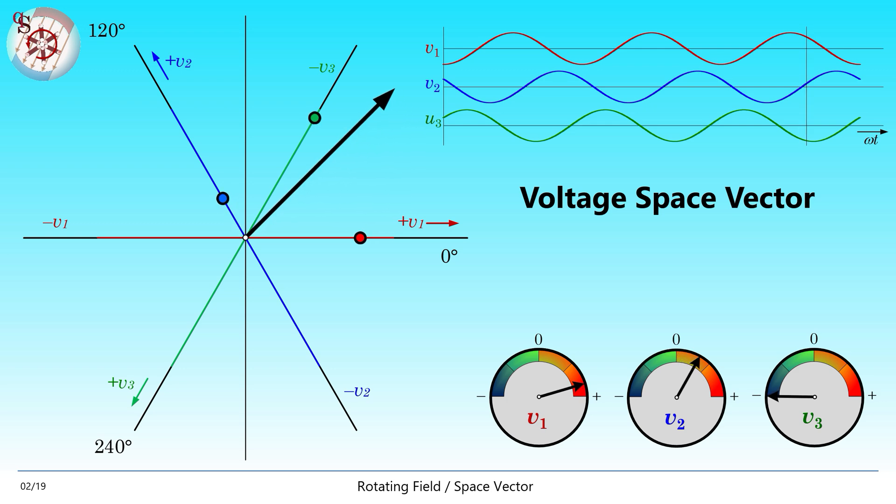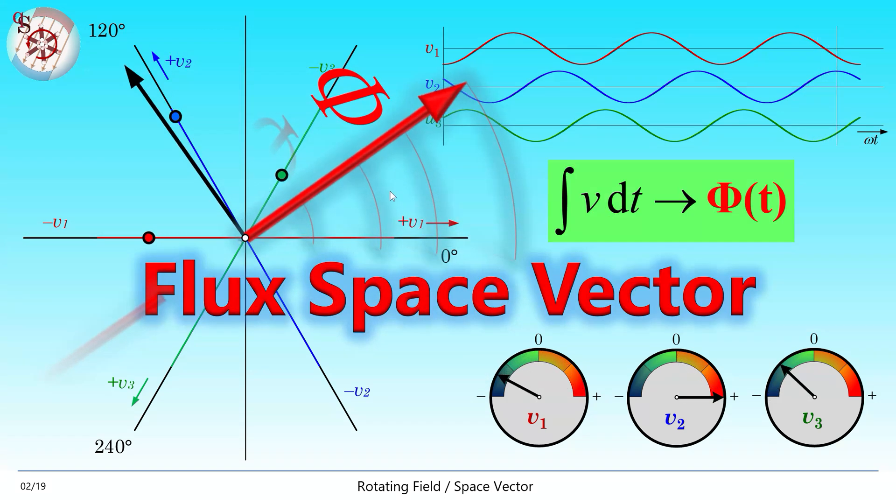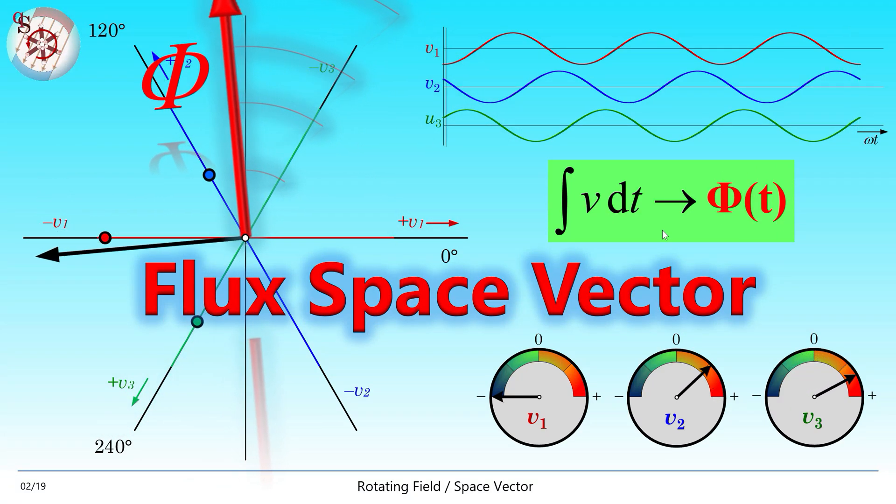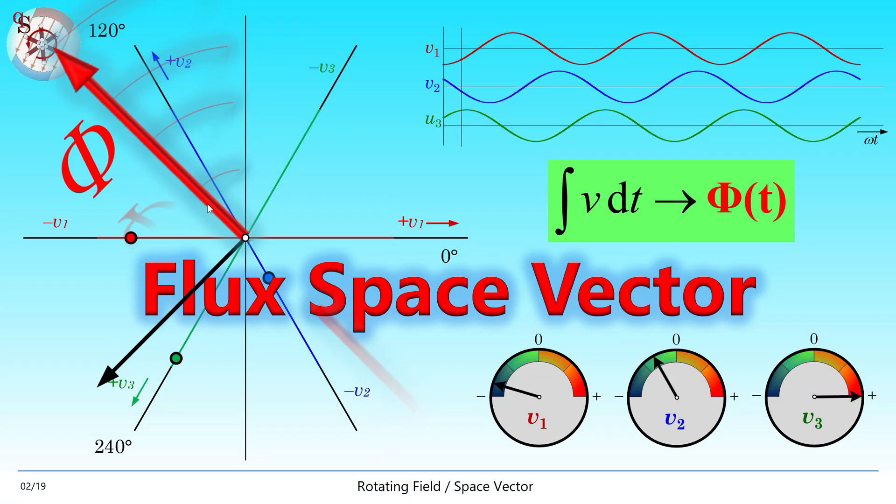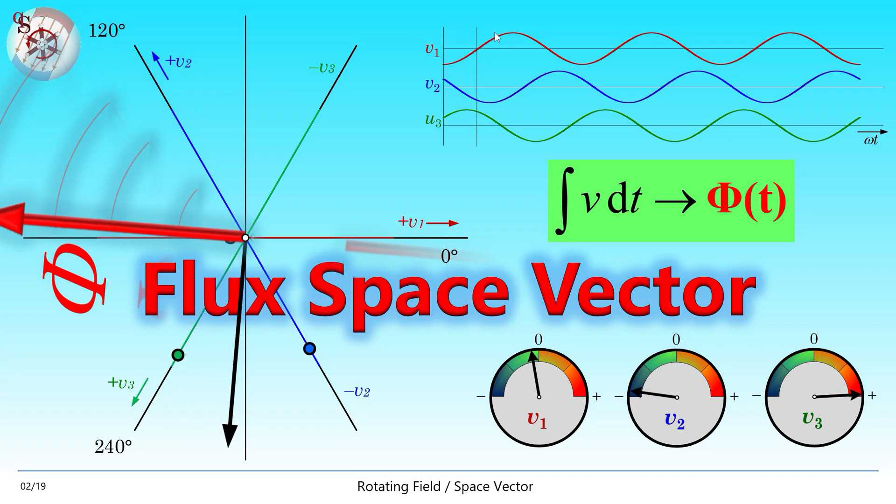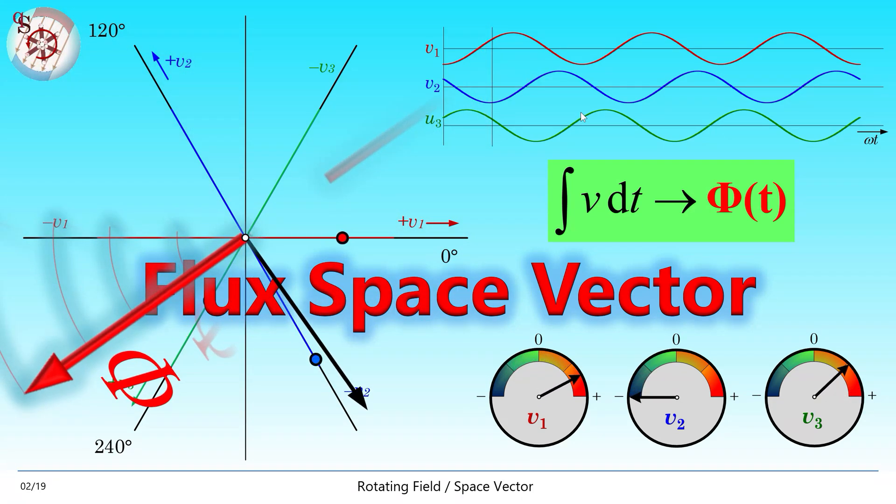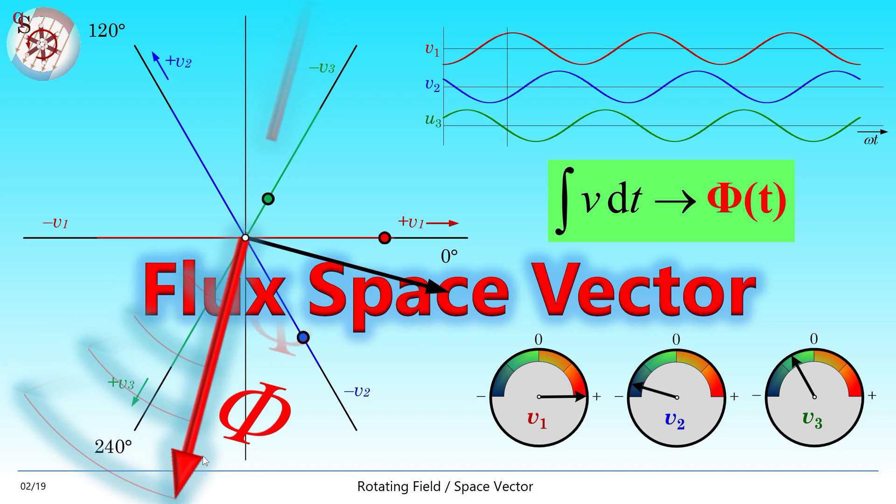What is even more intriguing, we can integrate this voltage vector and get the magnetic flux. Of course, we have to do it separately, one of the three voltages at a time and add up the three fluxes to a flux vector of a constant length.